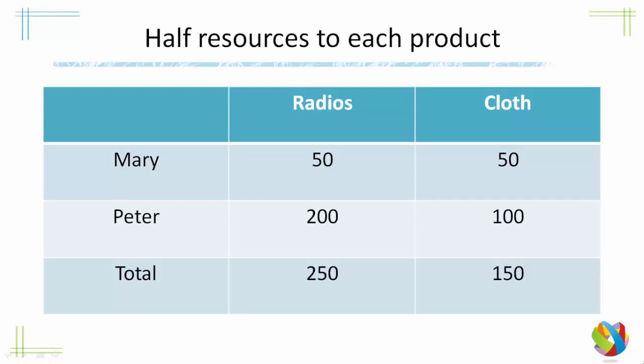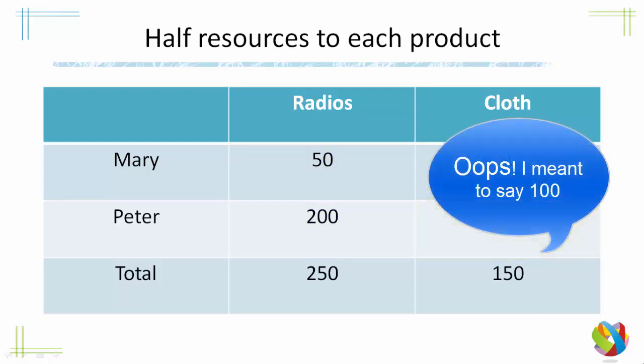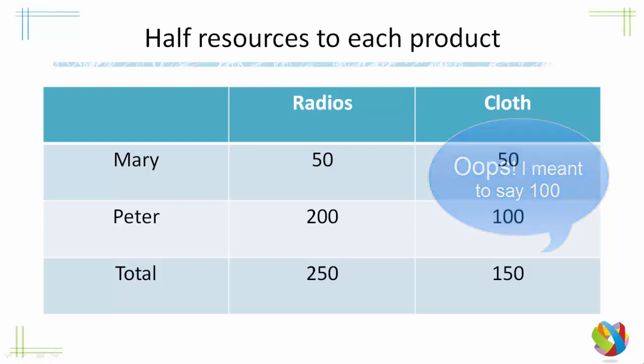Alright, let's imagine that Mary and Peter divide their resources in two and use half of their resources for producing radios and half for producing cloth. Mary produces 50 radios and 50 cloths, Peter 200 radios and 200 cloths. I'd like to emphasise that Peter has an absolute advantage in both of these products.